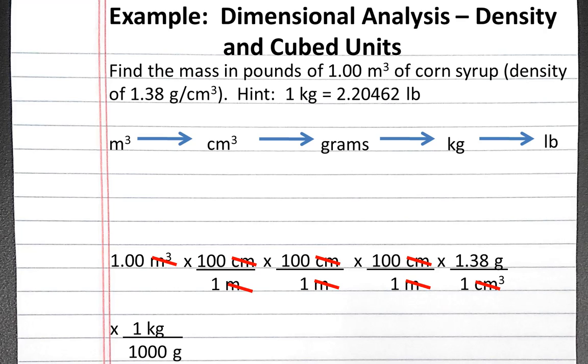Next, we can convert into kilograms by using the conversion factor 1 kilogram is 1,000 grams, so that our grams cancel and we're left with kilograms. Our last conversion factor we'll use is the one given in the hint. This will cancel kilograms so that we're left with pounds.